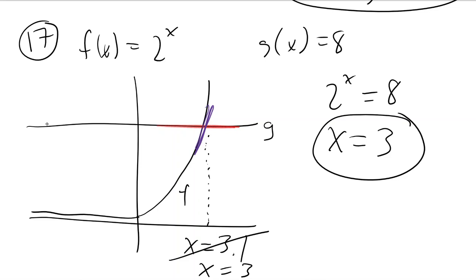So, that's what it looks like visually. When does this equation equal this equation? What x value does that happen?